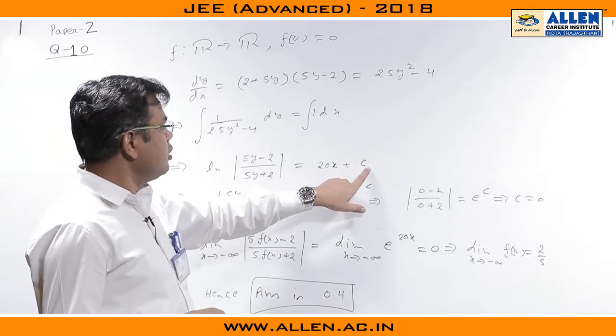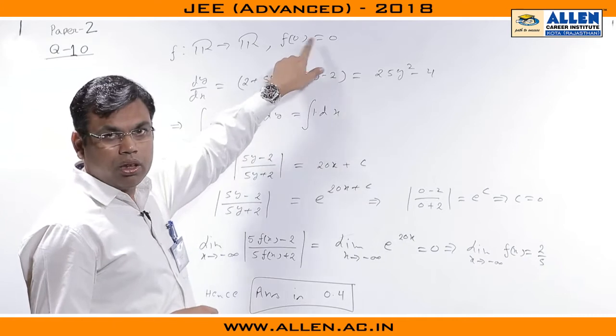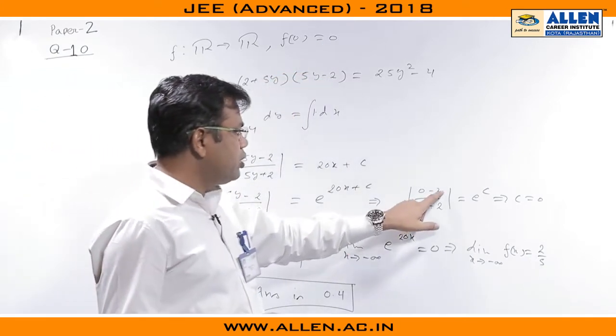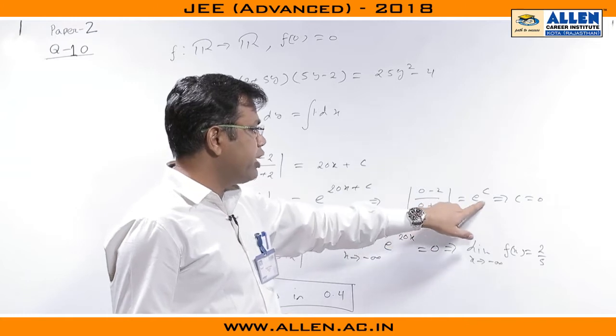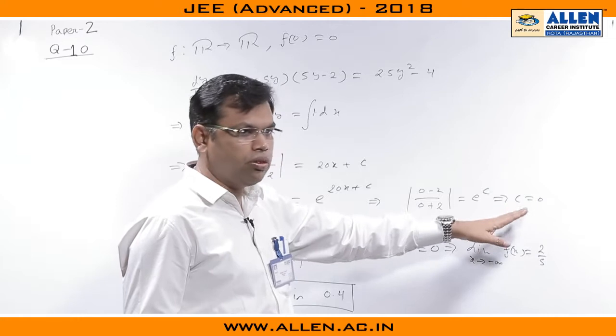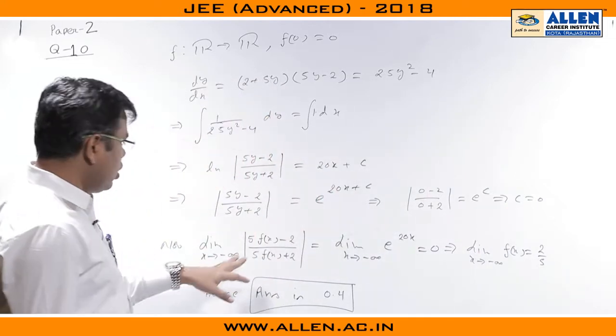We need to evaluate c. We are provided with the value f(0) equal to 0. Let us plug x equal to 0 on both sides which leads to (-2)/(2) equal to e^c, which gives c is equal to 0 since e^c becomes 1. So c has to be 0.